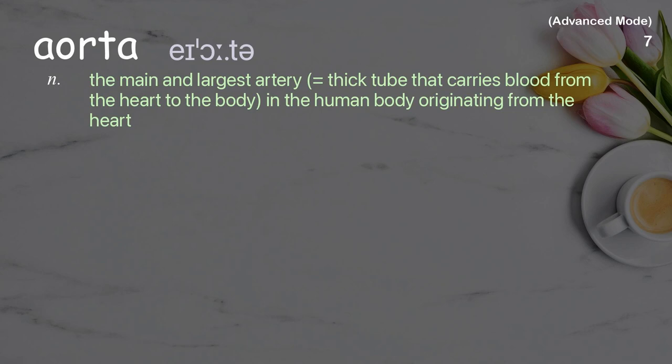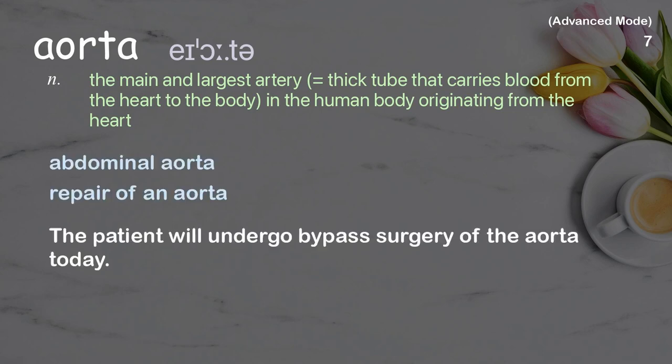Aorta: The main and largest artery — a thick tube that carries blood from the heart to the body — in the human body originating from the heart. Examples: abdominal aorta, repair of an aorta, the patient will undergo bypass surgery of the aorta today.